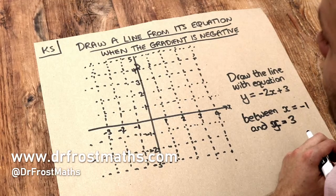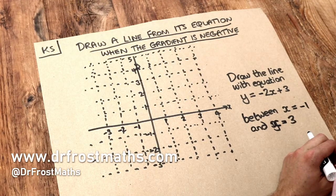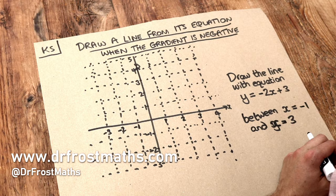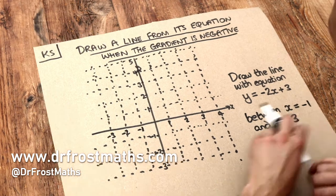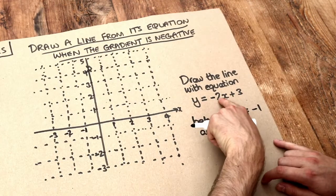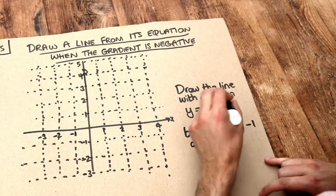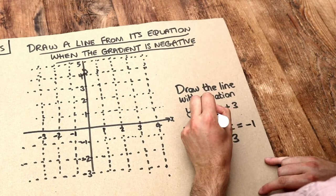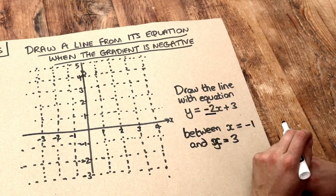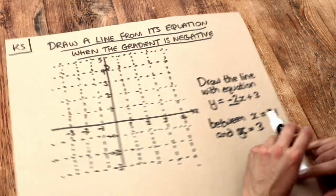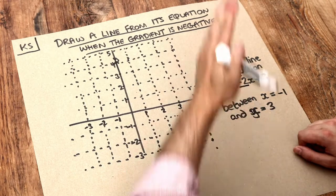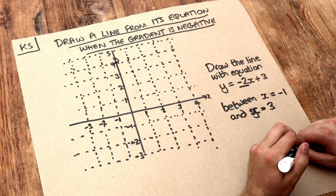Hello and welcome to this Dr. Ross-Math's key skill video on drawing a line from its equation when the gradient is negative. If the equation is in the form y equals something x plus something, this number in front of the x is known as the gradient, and that tells you how steep the line is.